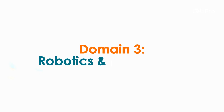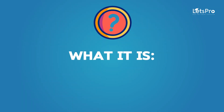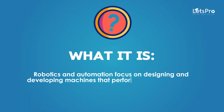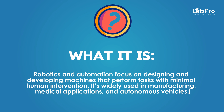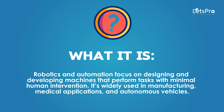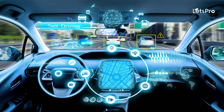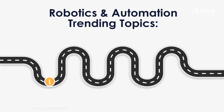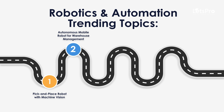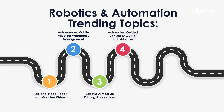Domain 3: Robotics and Automation. This field focuses on designing and developing machines that perform tasks with minimal human intervention. It's widely used in manufacturing, medical applications and autonomous vehicles. Trending topics include: pick and place robot with machine vision, autonomous mobile robot for warehouse management, robotic arm for 3D printing applications, automated guided vehicle for industrial use, and smart robotic gripper with force sensing.